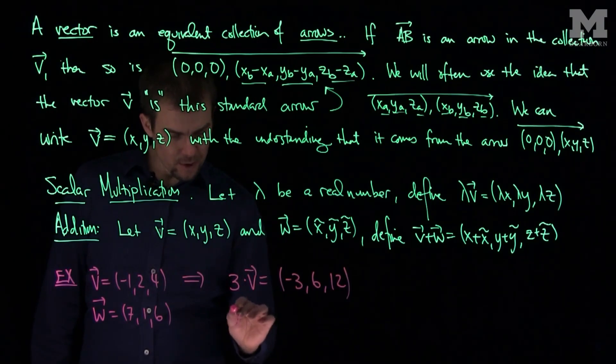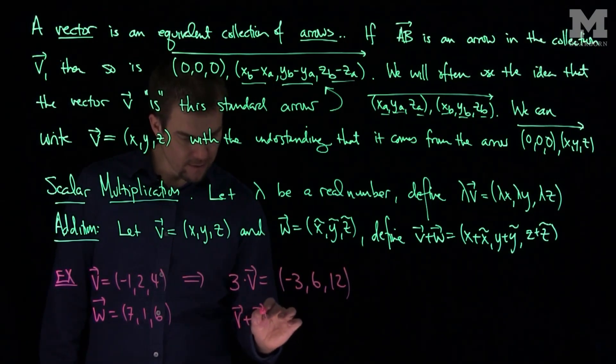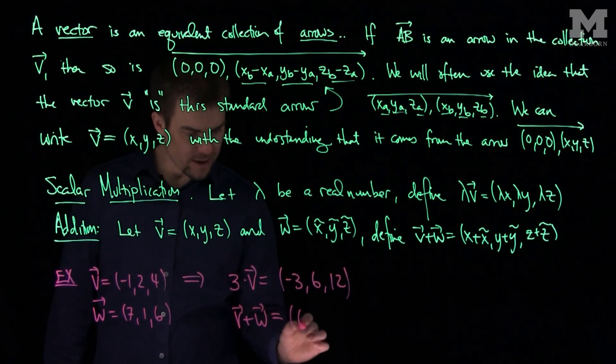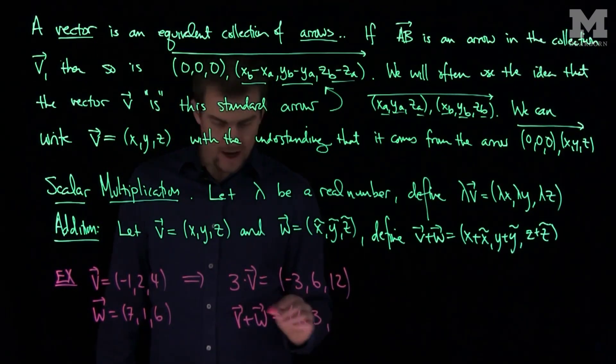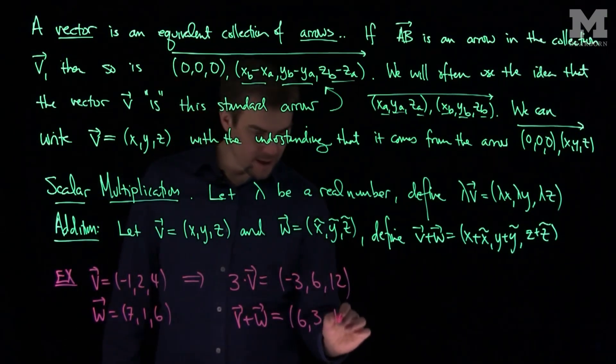The vector V plus W, let's add the vectors together. I'll have -1 plus 7, that'll be 6. I'll have 2 plus 1, that's 3. And 4 plus 6, that will be 10.